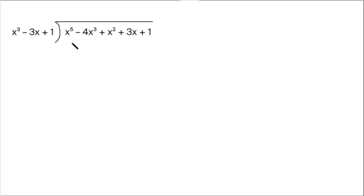As long as you're lining up vertically like terms, you're okay. So x cubed divides into x to the fifth x squared times, so we put x squared here.